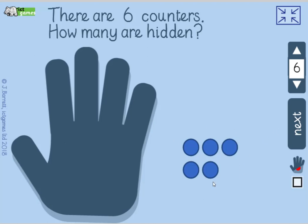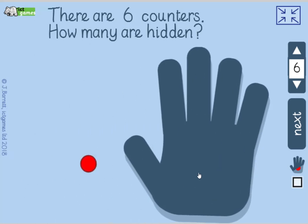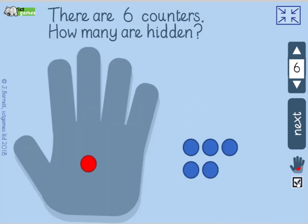I can see 5 here. What's under here? Yeah, it's 1. Another maths story — maths sentence: 1 add 5 equals 6, or 5 add 1 equals 6. Can you do a takeaway? 6 take away 5 equals 1, or 6 take away 1 equals 5.